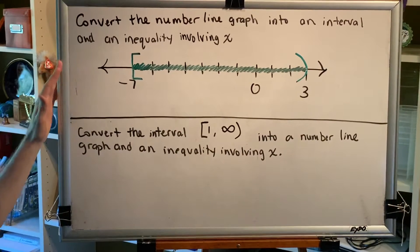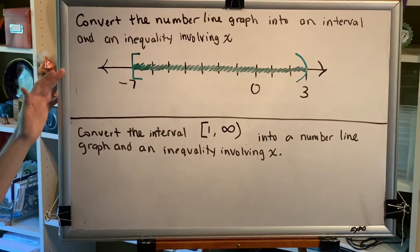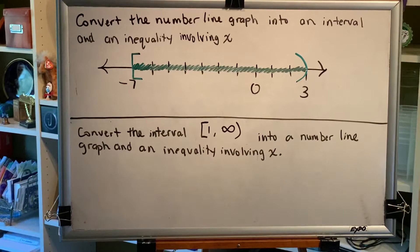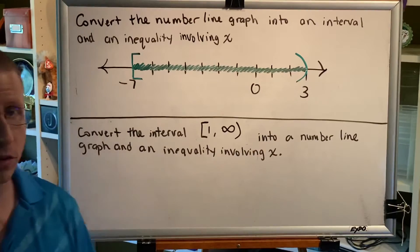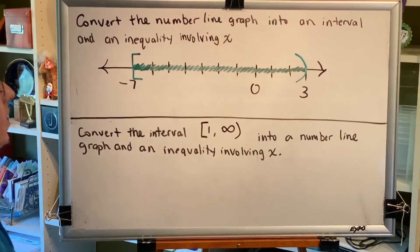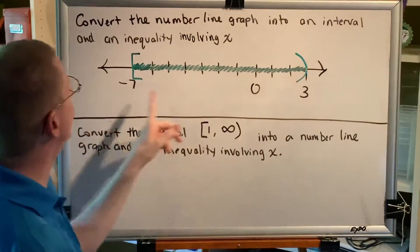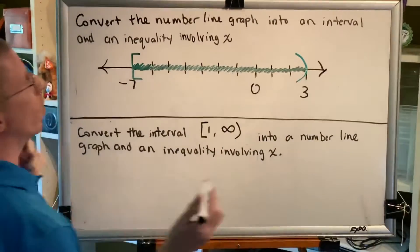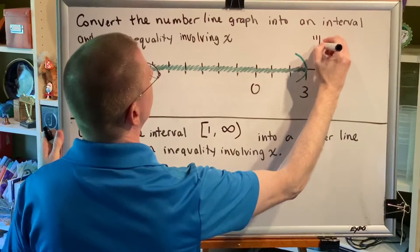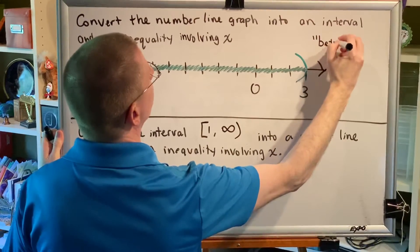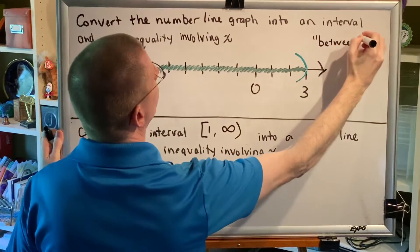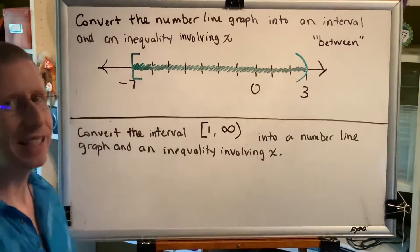Convert the number line graph into an interval and an inequality involving x. This is a very special type of collection of numbers, where we can see that the green shaded region is caught in between two values. The most important word from the sentence that I just said is between. This is a between type inequality.